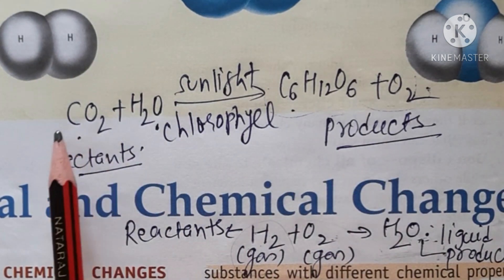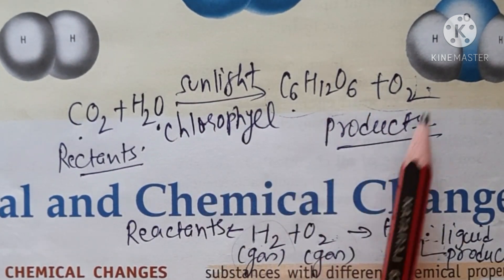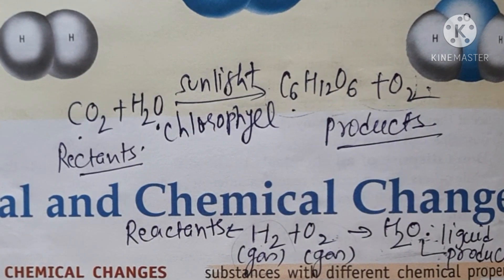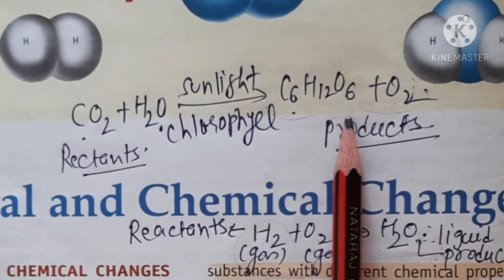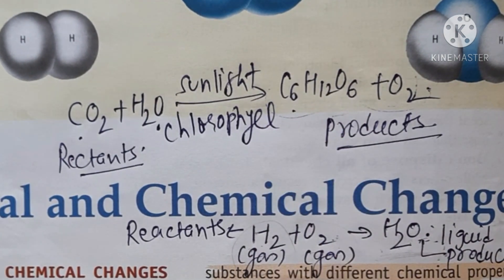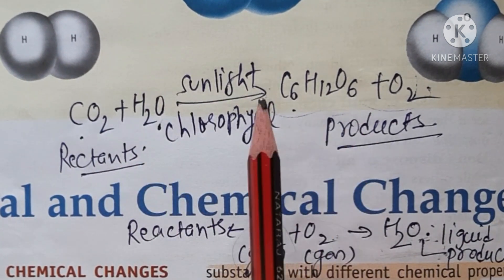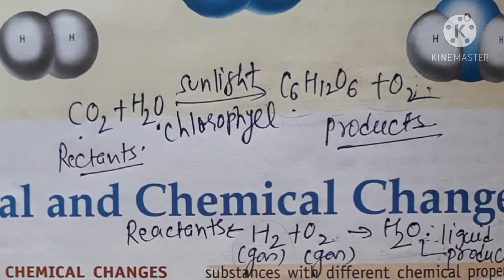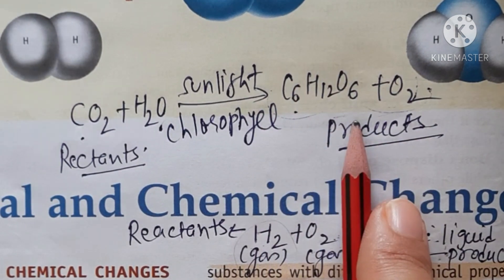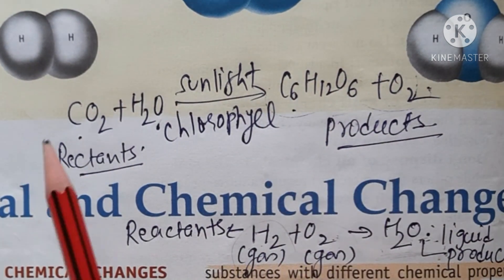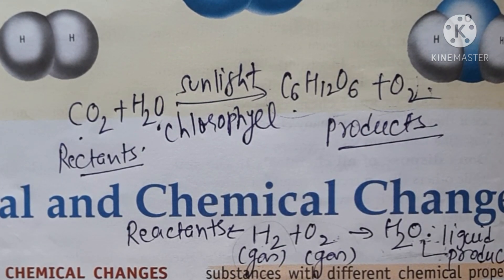The new substance formed after a chemical change has properties totally different from the elements it is made up of. Similarly, in photosynthesis - which you studied in Chapter 1 - carbon dioxide and water in the presence of sunlight and chlorophyll convert into glucose and release oxygen. So glucose is a new substance formed after the chemical reaction between carbon dioxide and water. Therefore, we can consider that change as a chemical change.